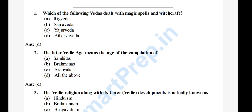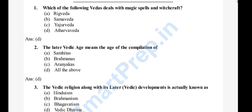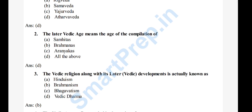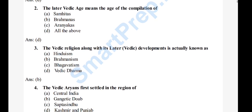Question 3: The Vedic religion along with its Latter Vedic development is actually known as — A) Hinduism, B) Brahmanism, C) Bhagavatism, D) Vedic Dharma. The right answer is option B, Brahmanism.